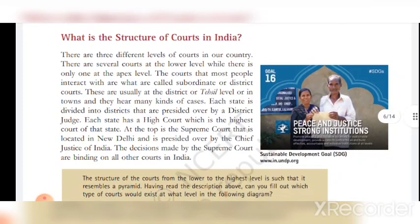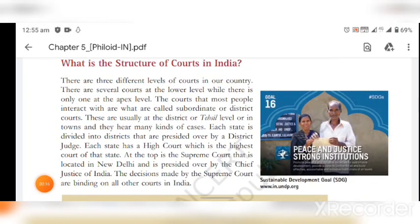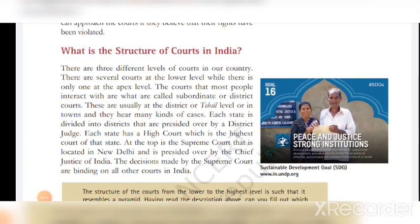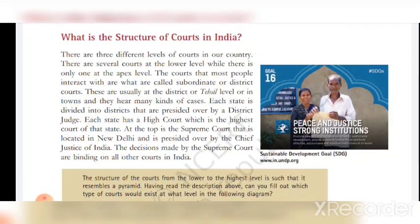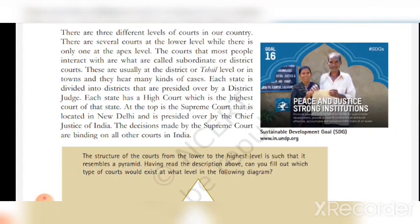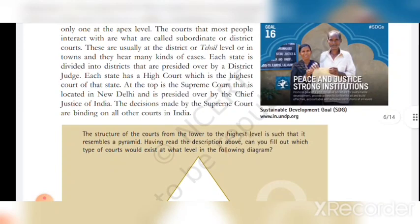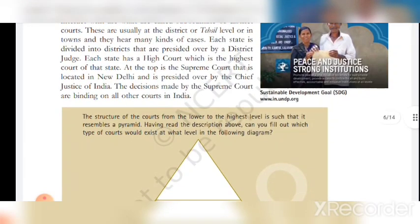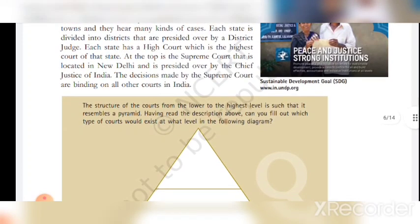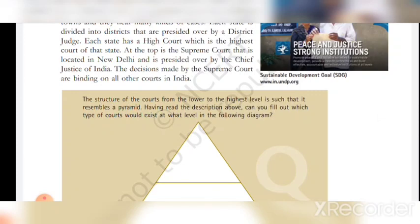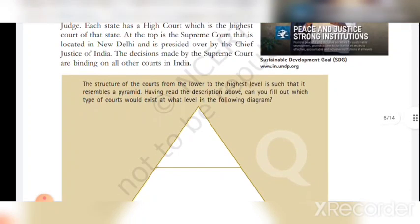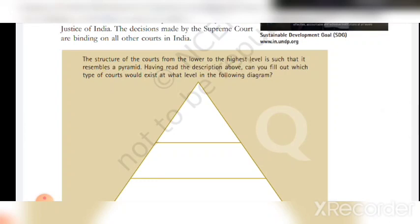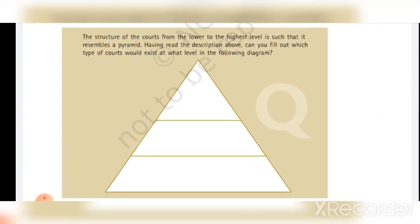What is the structure of courts in India? There are three different levels of courts in our country. There are several courts at the lower level while there is only one at the apex level. The courts that most people interact with are what are called subordinate or district courts. These are usually at the district or talsi level or in towns, and they hear many kinds of cases. Each state is divided into districts that are presided over by a district judge. Each state has a High Court, which is the highest court of the state. At the top is the Supreme Court, located in New Delhi, and presided over by the Chief Justice of India. The decisions made by the Supreme Court are binding on all other courts in India.